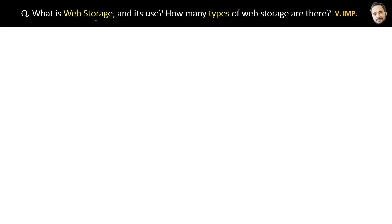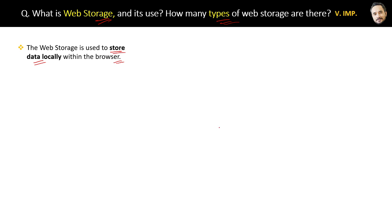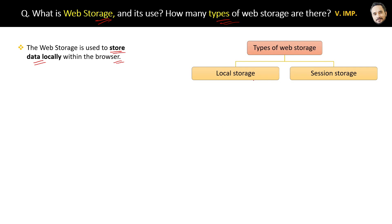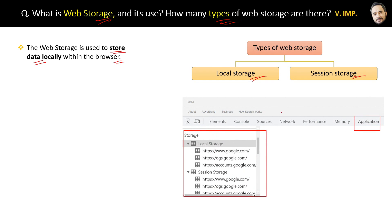Web storage is used to store data locally within the browser. There are two types of web storage: local storage and session storage. If you go to the browser and look in the developer tools under the application tab, you will find both local storage and session storage there.